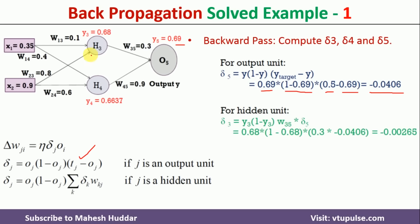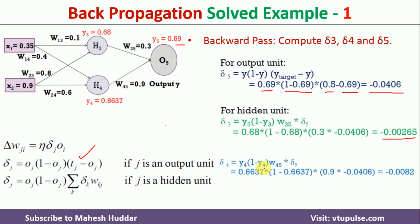Now we calculate the error term at h3: δ3 = y3 × (1 − y3) × w35 × δ5. Substituting all values gives δ3 = 0.00265. Similarly, the error term at h4: δ4 = y4 × (1 − y4) × w45 × δ5 = 0.9 × (that term), giving δ4 = −0.0082.